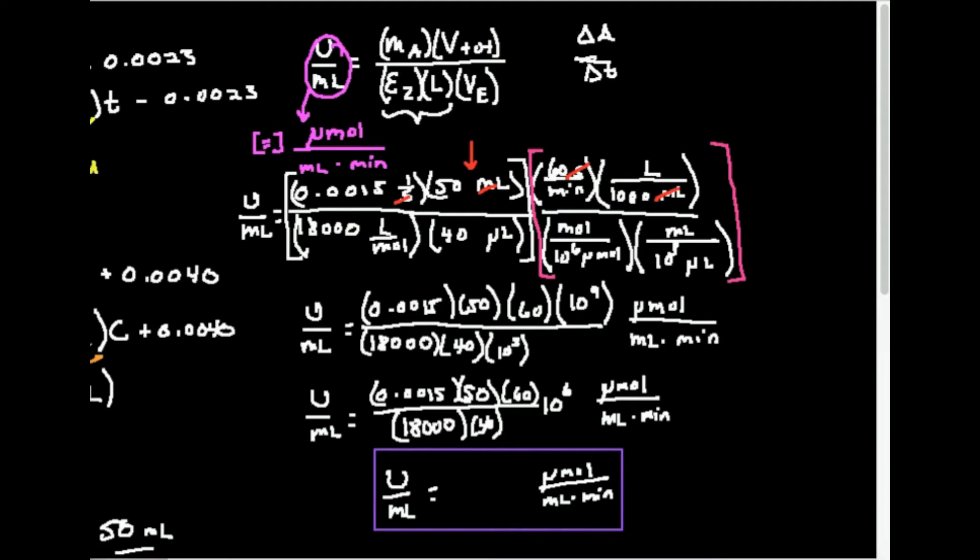Also notice for the slope of the Z assay, L cancels with L there. I also want to convert this moles to micromoles. So one mole is 10 to the 6 micromoles. So moles cancel there. I also want to convert this microliters to milliliters. So there's 10 to the third microliters in a mil. Microliters cancel. Notice I will have micromoles per mil per minute whenever I multiply this out. And so I'm multiplying all these numbers right here. And I'm going to go ahead and calculate what the u per ml is.